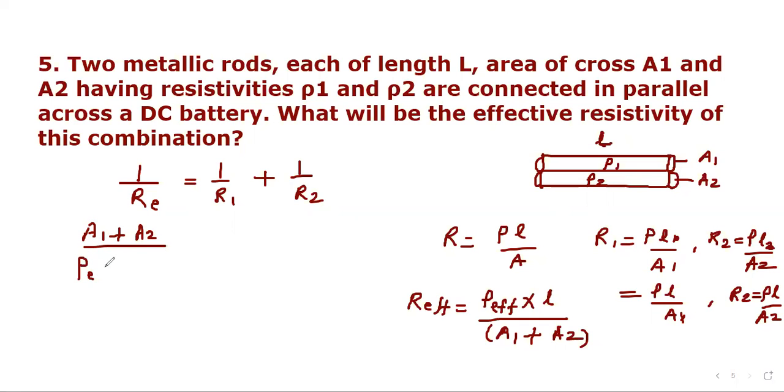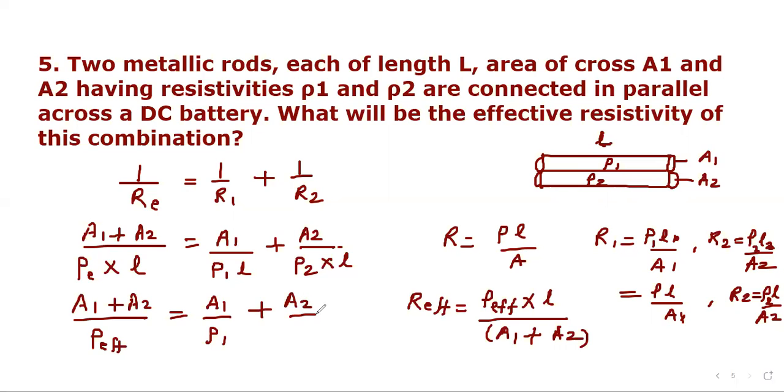So we put these values here. So it will become A1 plus A2 divided by rho effective times L equal to, so it will become A1 divided by rho1 L plus A2 divided by rho2 into L. Now L can be cancelled. So A1 plus A2 divided by rho effective equal to A1 upon rho1 plus A2 upon rho2.